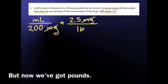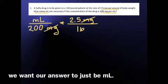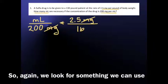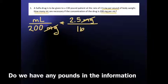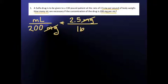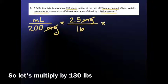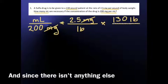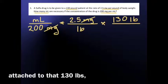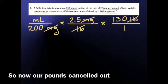But now we've got pounds. And we don't want our answer to have pounds in it, we want our answer to just be milliliters. So again, we look for something we can use to cancel out the pounds. Do we have any pounds in the information that's given to us? Yes, we have 130 pounds as the weight of the patient. So let's multiply by 130 pounds. And since there isn't anything else attached to that 130 pounds, that's just over 1. So now our pounds canceled out.